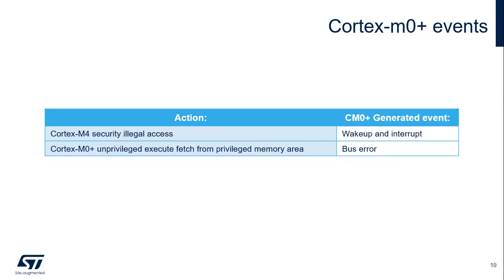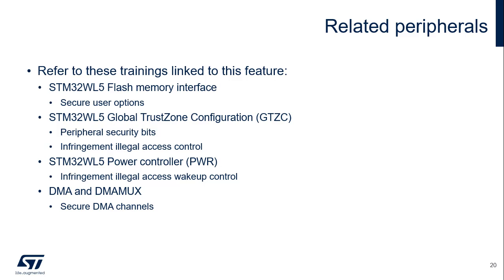This slide lists the events handled by the Cortex-M0 Plus resulting from the Cortex-M0 Plus security features. Any Cortex-M4 illegal access to secure resources generates an illegal access event sent to the Cortex-M0 Plus. In addition to this training, you may find the Flash Memory Interface, Global Trust Zone Controller, Power Controller, and DMA and DMA-Mux modules useful.